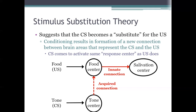So in this theory, the only real difference between the unconditioned response and the conditioned response is how the salivation center comes to be activated. The unconditioned stimulus activates it through a direct connection between the food center and the salivation center, whereas the conditioned stimulus activates it more indirectly — it sort of passes through the food center on its way to the salivation center. Pavlov's account is known as stimulus substitution theory because it suggests that the conditioned stimulus basically becomes a substitute, a surrogate for the unconditioned stimulus. Because of its pairings with the food, the tone also acquires the ability to activate the food center and therefore elicit salivation, albeit in this more indirect fashion.